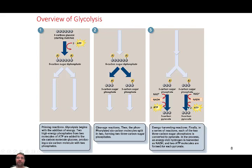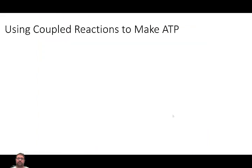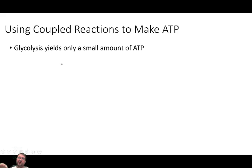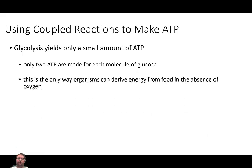So your net gain of energy is pretty simple. You end up with four ATP, but you already spent two. So from one glucose molecule going through glycolysis, you're only generating two net ATP. There's a lot of energy still in these pyruvates, and that's where the Krebs cycle comes in. Glycolysis yields a very small amount of ATP per glucose molecule — only two ATP per molecule of glucose. That being said, this is the only way organisms can get energy in the absence of oxygen. When there's no oxygen, glycolysis is it — it's the only way you can convert glucose into ATP.